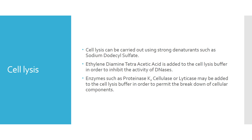The lysis of the cell depends on the type of the cell. For instance, plant cells will require an enzyme known as cellulase to degrade the cellular components, which primarily consist of cellulose. In the case of yeast, the enzyme lyticase may be utilized to degrade cellular components associated with yeast. In the case of protein-rich cells, such as animal cells, proteinase K can be employed to degrade the proteinaceous components of the cell wall.